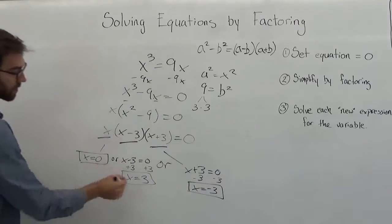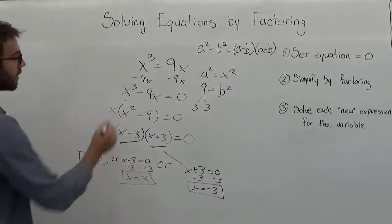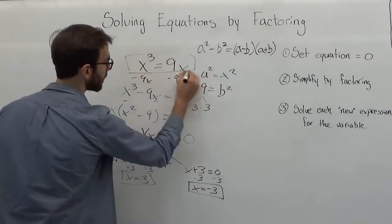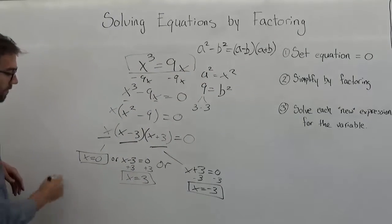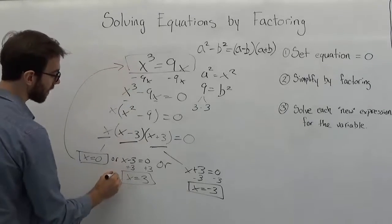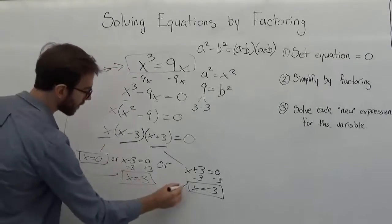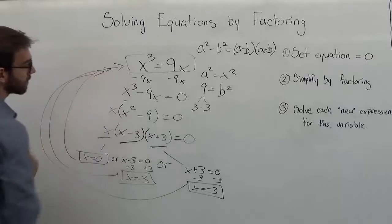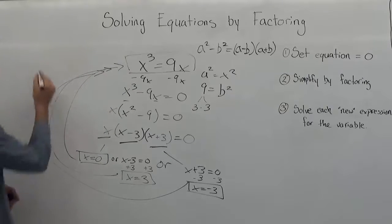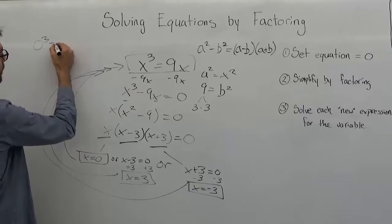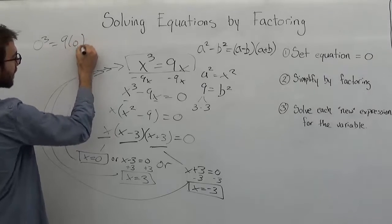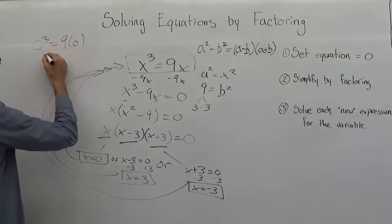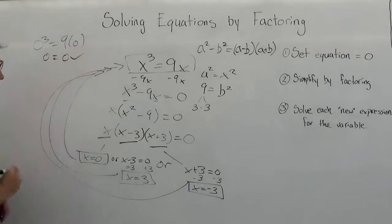And finally, what you always want to do, especially when you start getting a lot of possible values, is plug these back in. Just make sure that everything still solves for your equation. 0 to the third equals 9 times 0. 0 does equal 0.